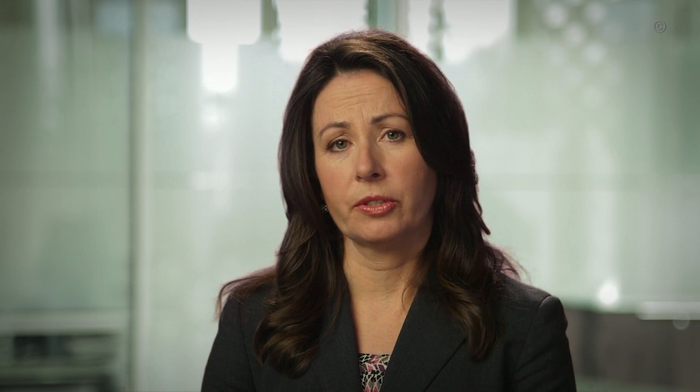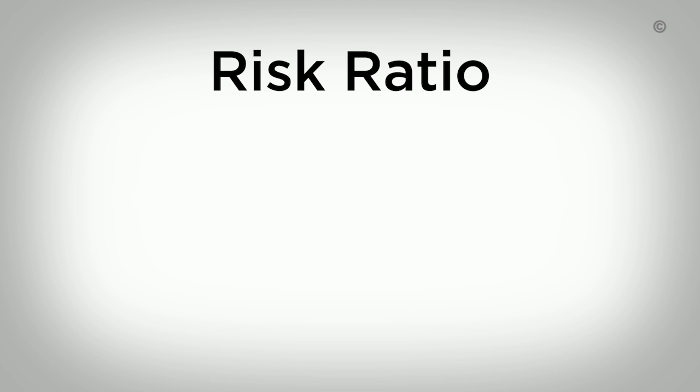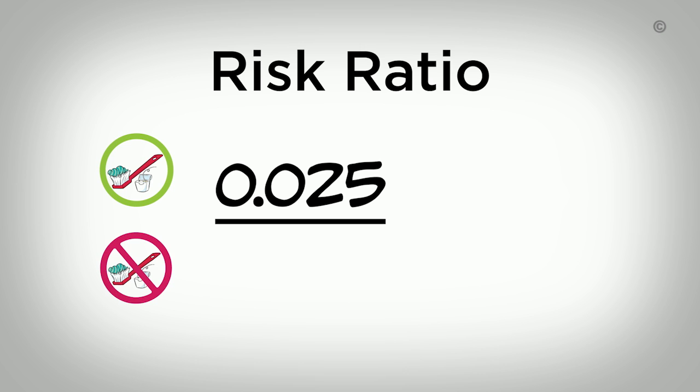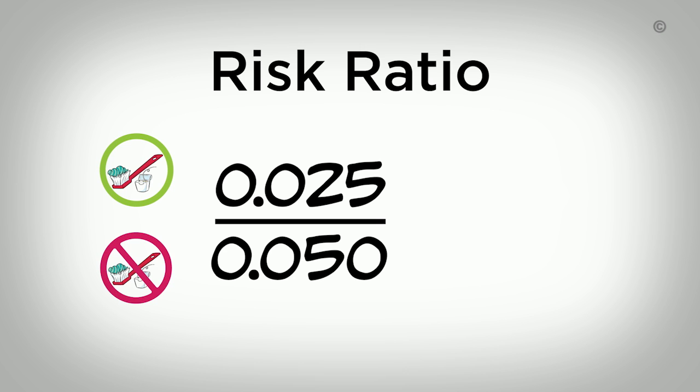Now that we know both the risk of dental caries among children receiving oral hygiene education and the risk among those not receiving the education, we can calculate the ratio between them. Risk ratios are calculated by dividing the risk of the event among those exposed to the intervention by the risk of the event among those not exposed. In our example, we divide the risk among children receiving the education, 0.025, by the risk among children not receiving the education, 0.05. This gives us a relative risk of 0.5.